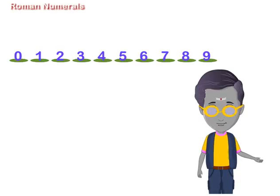These numerals are called Hindu-Arabic numerals. Romans used other symbols for writing numbers. They used only 7 basic symbols.